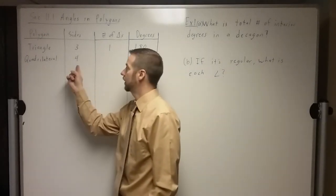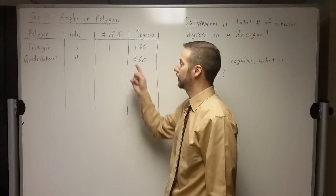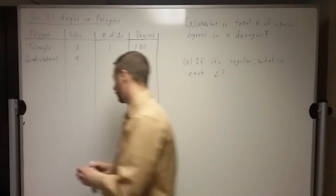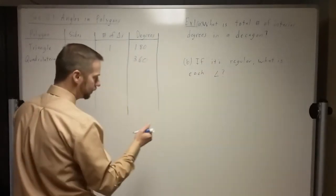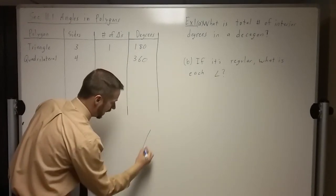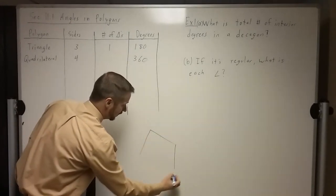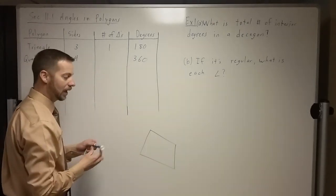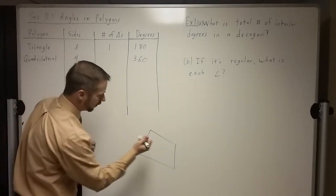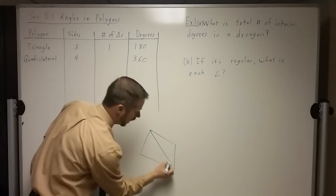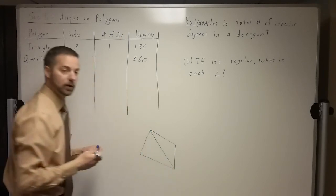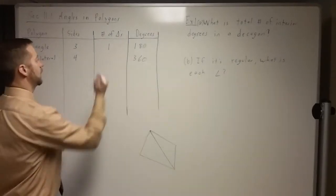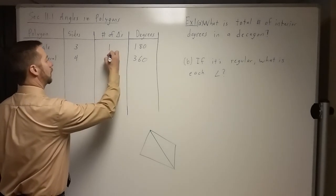A quadrilateral has four sides — we already know that has 360 degrees. I left this one blank because I wanted to talk about it. If I have a quadrilateral — not any specific type, just any quadrilateral — I could split this into two triangles by just putting in a diagonal. So we've got two triangles there if we've got a quadrilateral.